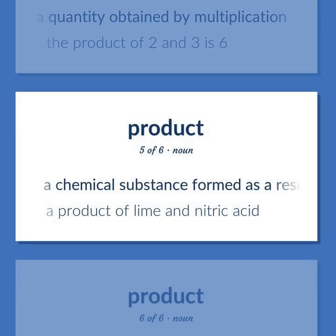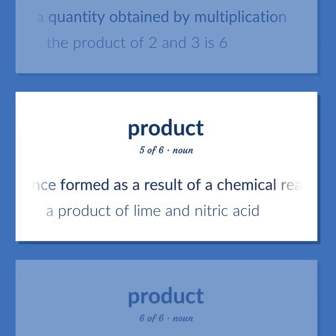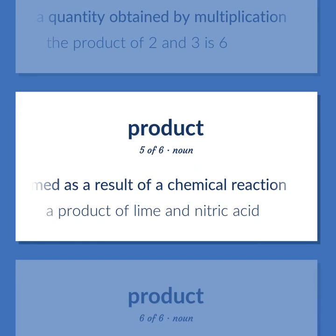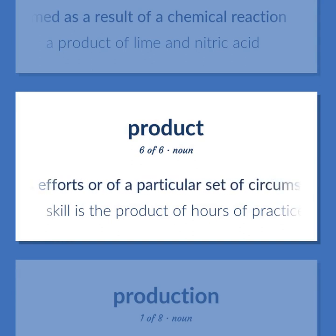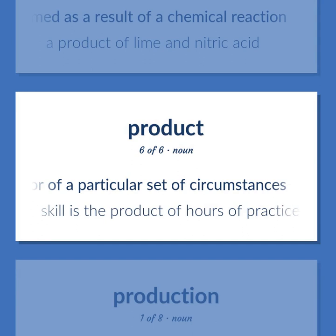Product (noun): A chemical substance formed as a result of a chemical reaction. Example: A product of lime and nitric acid. Also: a consequence of someone's efforts or of a particular set of circumstances. Example: Skill is the product of hours of practice.